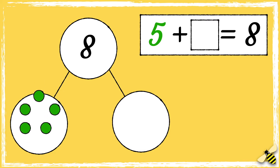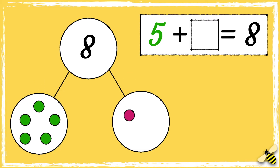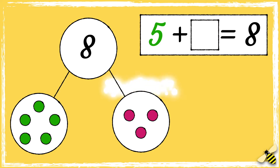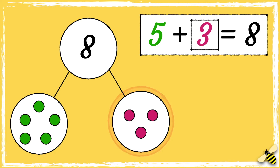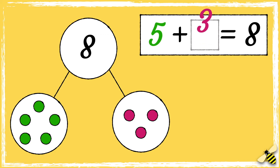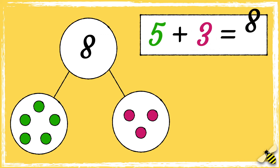Five, six, seven, eight. How many pink spots did we add? We added three pink spots so three is the missing part. Five add three equals eight.